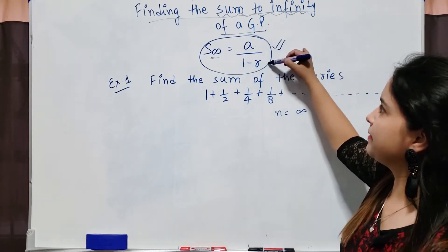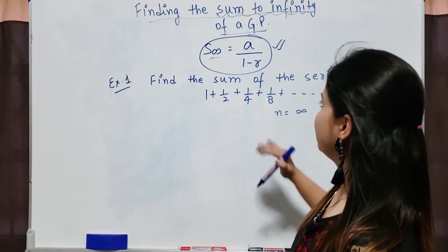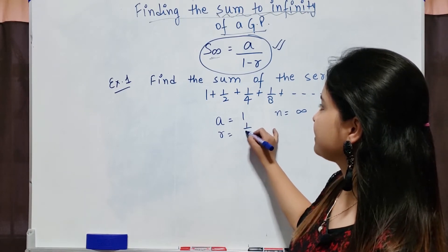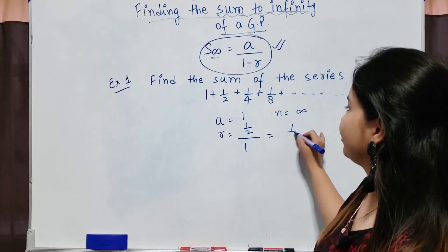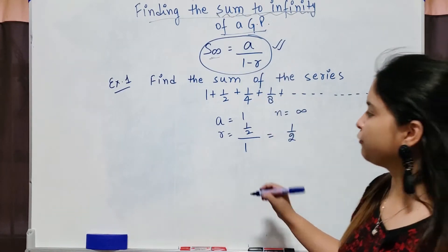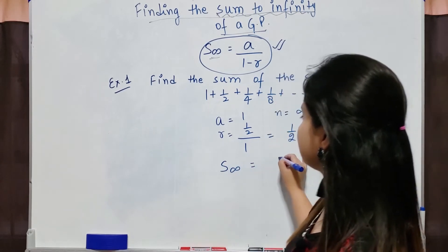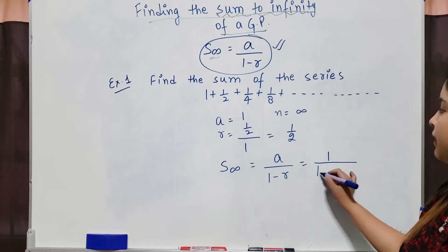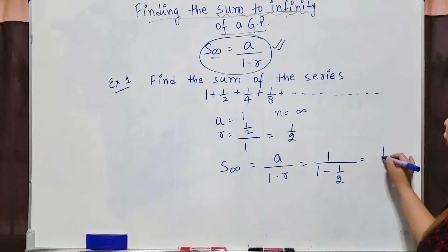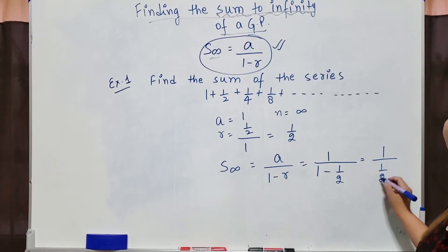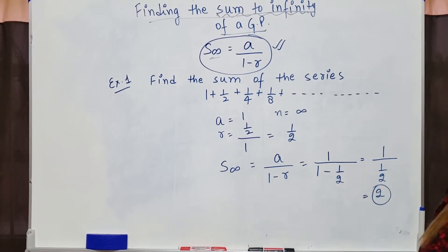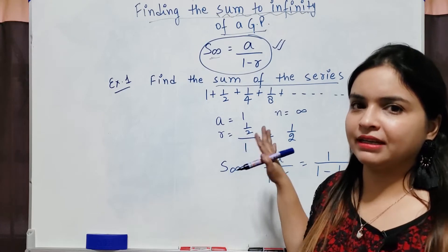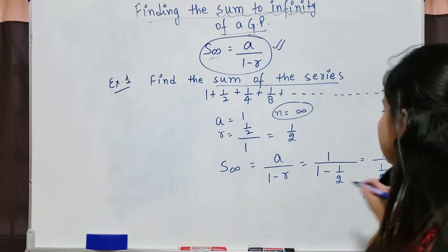A is your first term, r is the common ratio. Look at this example. What is a? A is 1. What is r? R is second term divided by first term, which is 1/2. Use the formula: S∞ = a over 1 minus r, which is 1 over (1 minus 1/2), which is 1 over 1/2, which is equal to 2. That means the sum of this given series where n is infinity is 2.